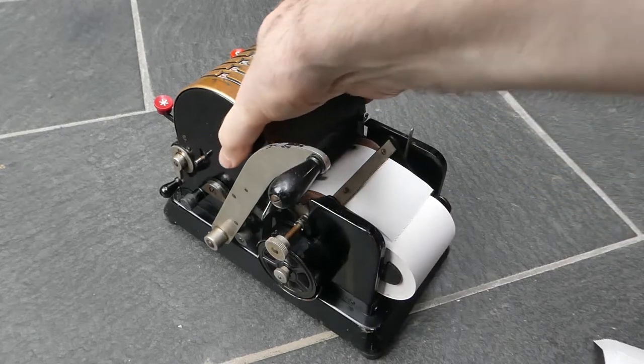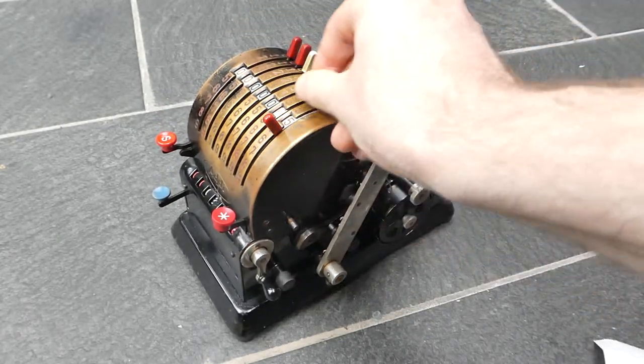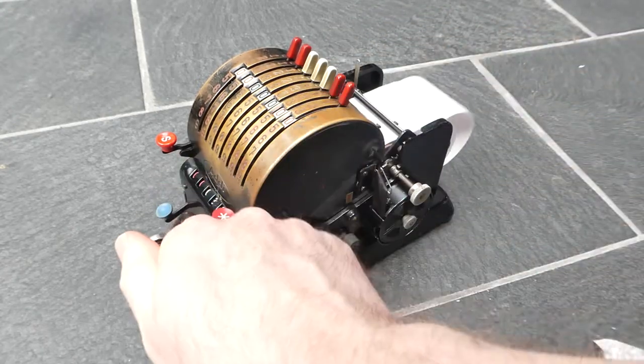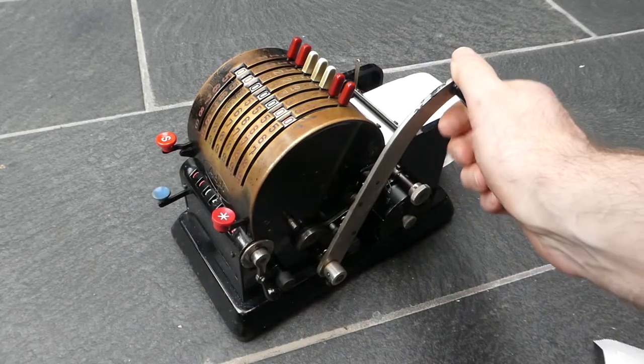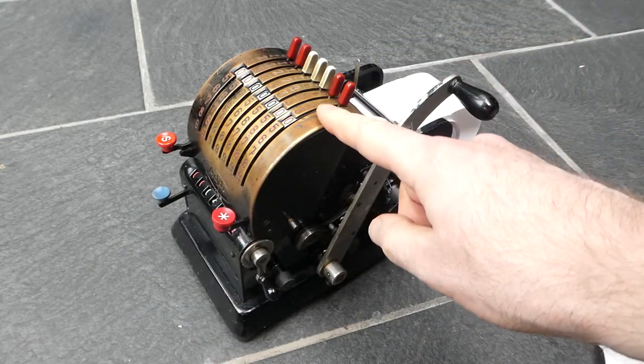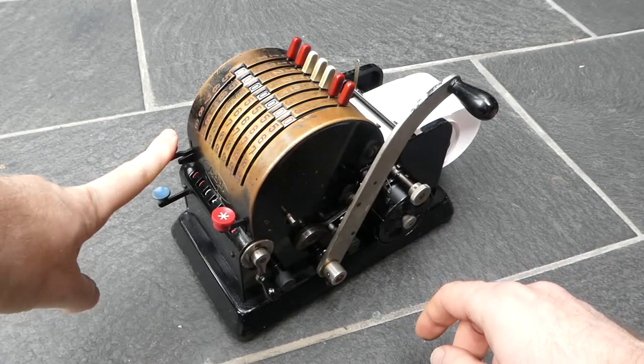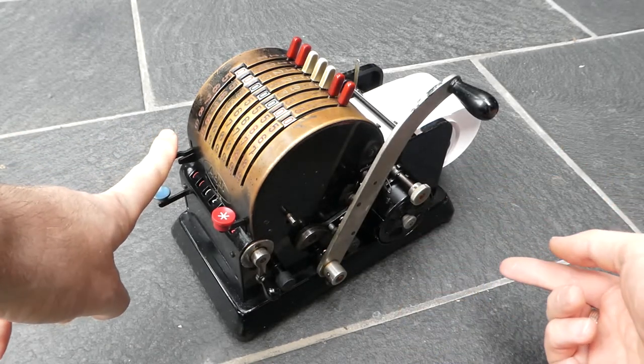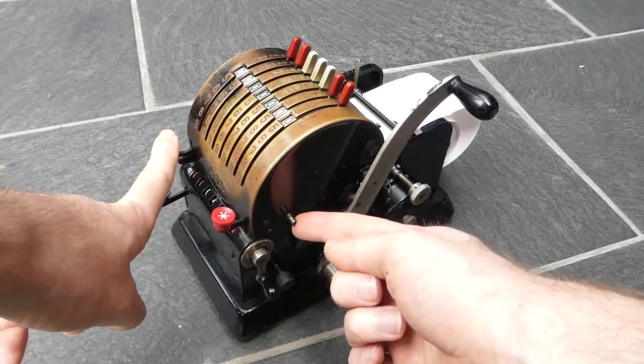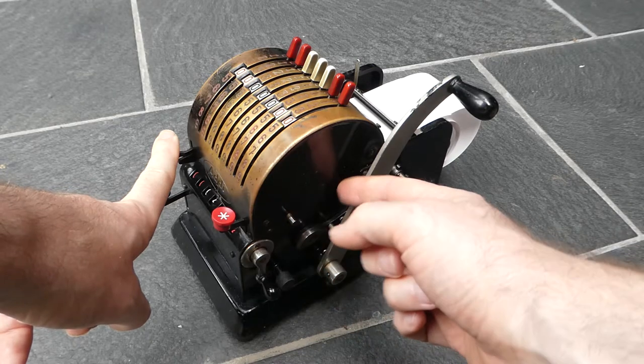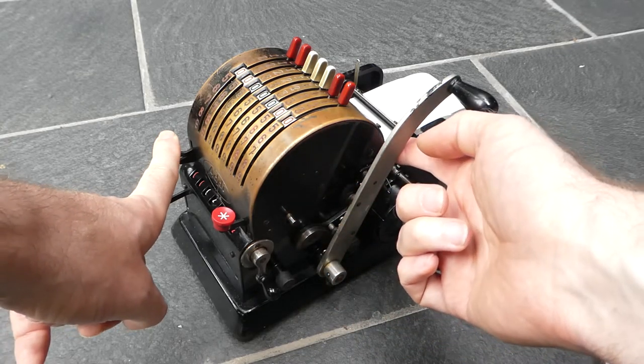So let's also do subtraction. If you do a subtraction you press the S button. You hear this click. And what that does is it lifts this small pin here and it also moves a printing head up here that will print a minus sign.